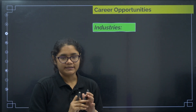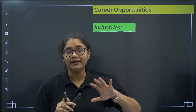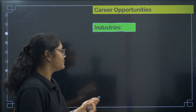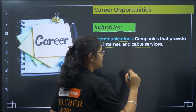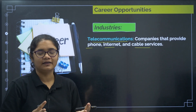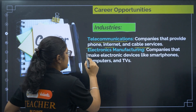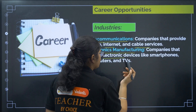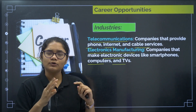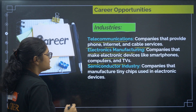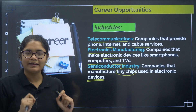Coming to Career Opportunities — here we discuss the industries where Electronics and Communication Engineers can work. First is Telecommunications — companies that provide phone, internet, and cable services, such as Airtel, Jio, and BSNL. Next is Electronics Manufacturing — companies that make smartphones, computers, and TVs, such as LG, Nokia, and Samsung. In Semiconductor Industries, you make tiny chips and integrated circuits used in electronic devices — companies here include Qualcomm and Intel.